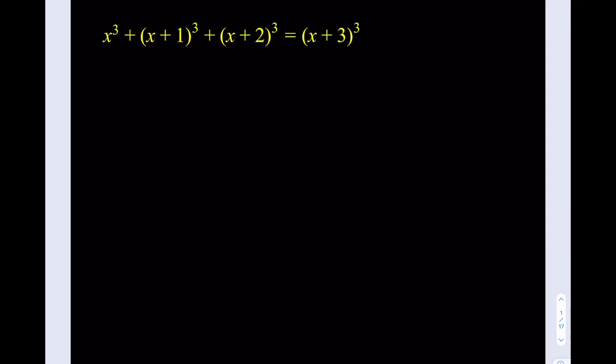Okay, so we have x³ + (x+1)³ + (x+2)³ = (x+3)³. On the left hand side we see a sum of cubes that are basically consecutive and the right hand side is just continuous from where we left off.